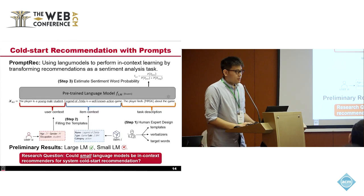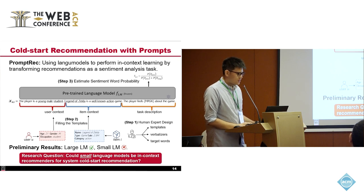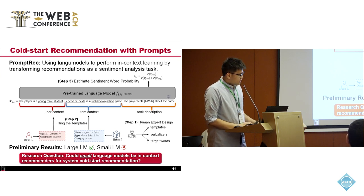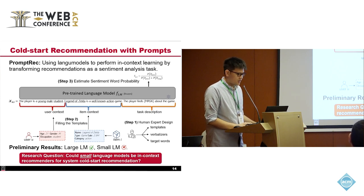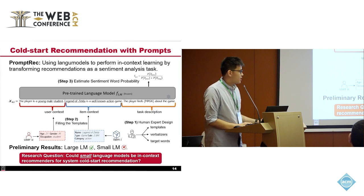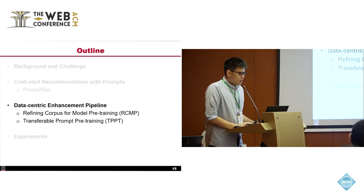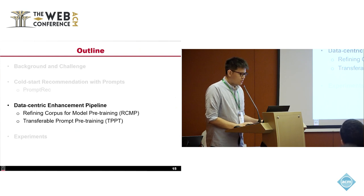Through our experiments, we find that larger language models work well with PromRec. However, small language models fail. Since our focus is recommendation systems, we are very sensitive to latency. So we ask: could a small language model be an effective in-context recommender for our task? We propose a data-centric pipeline to enhance a small language model's in-context learning ability to solve these problems.